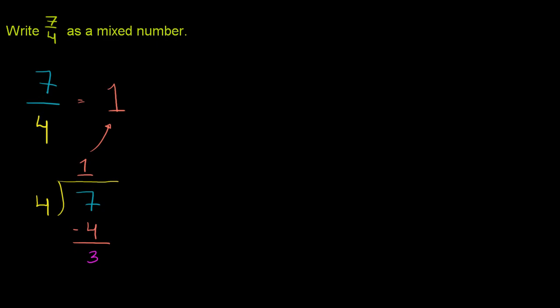Well, you have 3 left over. And that comes from right over there. That is the remainder when you divide 4 into 7.